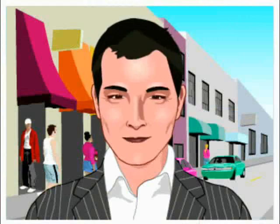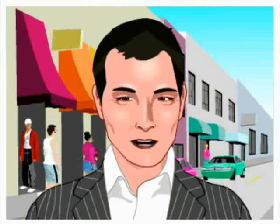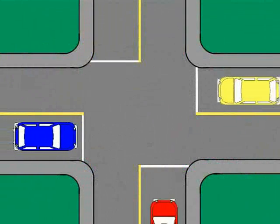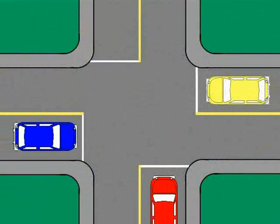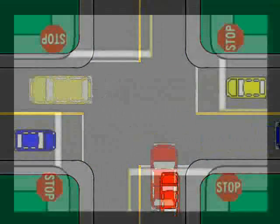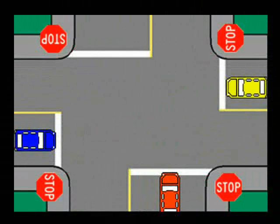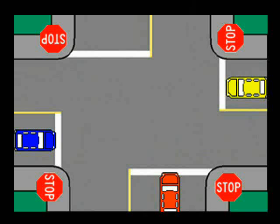Scenario one of one. At an intersection where stop signs are located on all four corners, the first vehicle to come to a full stop should be allowed to proceed first. When two vehicles arrive at such an intersection at the same time, the vehicle on the right-hand side has the right of way and should proceed through the intersection first.